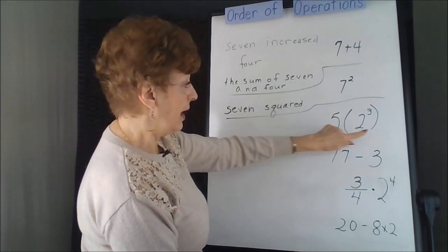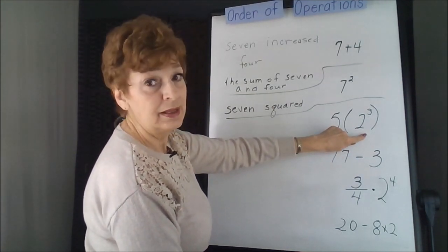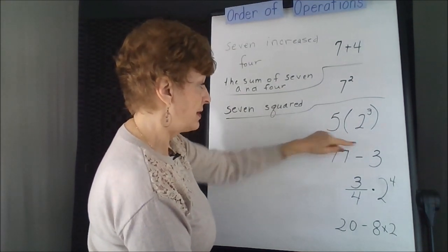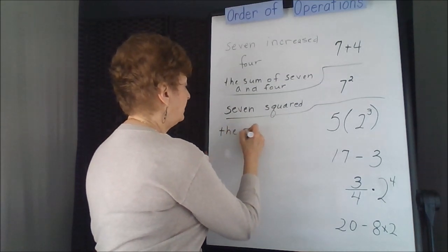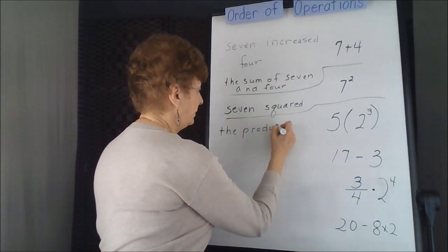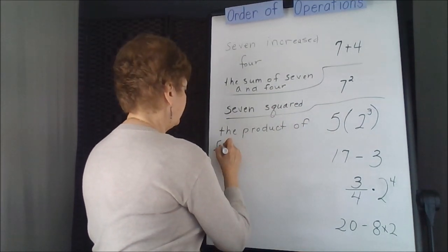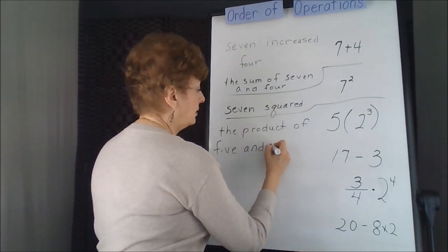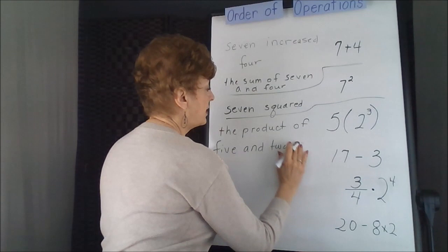This one has an exponent in it, and order of operations says we have to do the exponents first. So we could express this as the product of 5 and 2 cubed.